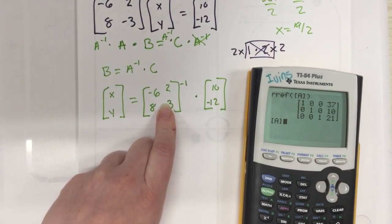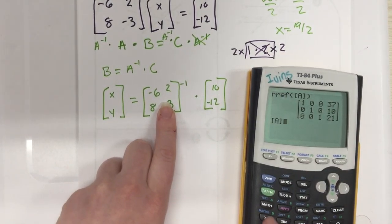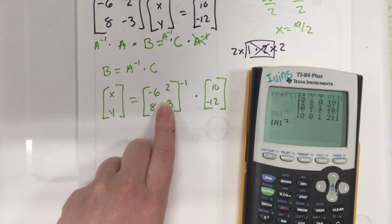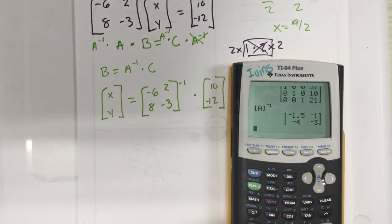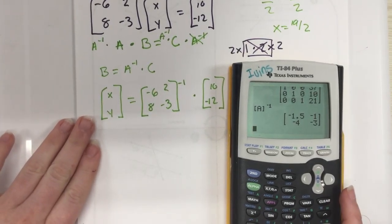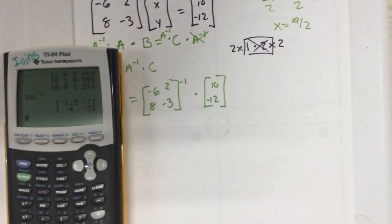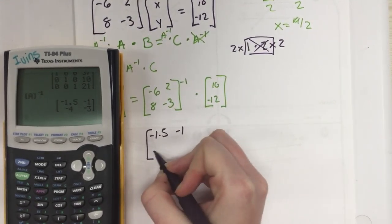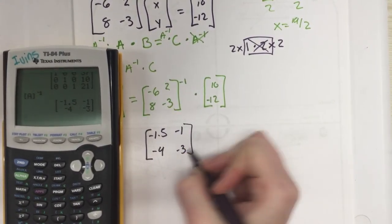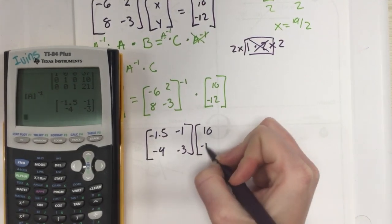The first thing I need to do is find the inverse of matrix A, so I'll hit second matrix A. Remember the inverse is just the negative 1 exponent. I get this answer right here. If you want to change it into fractions you can since this is an ending decimal. This is -1.5, -1, -4, -3, and we are multiplying it by [10, -12].